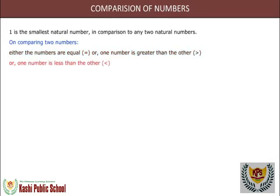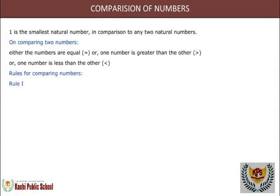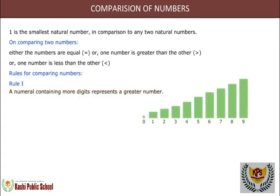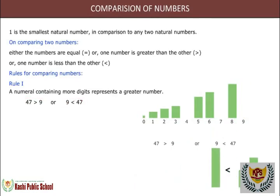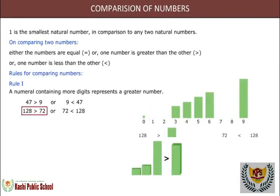Rules for comparing numbers. Rule 1: A numeral containing more digits represents a greater number. For example, 47 is greater than 9, or 9 is less than 47. 128 is greater than 72, or 72 is less than 128.